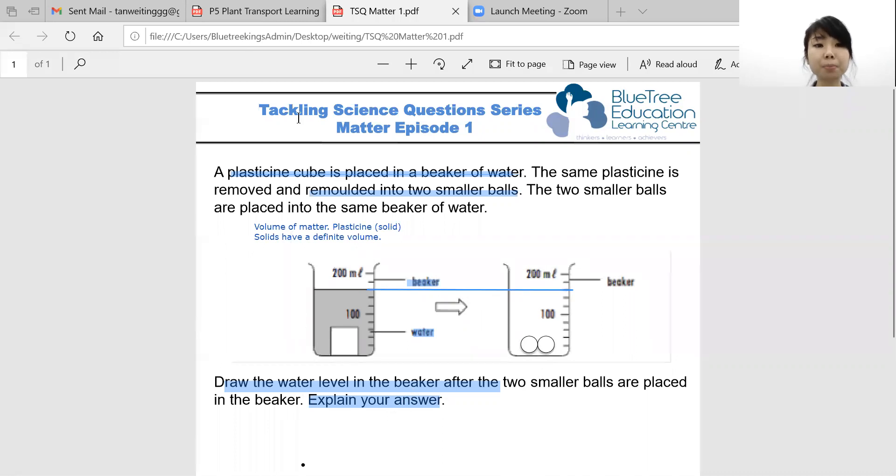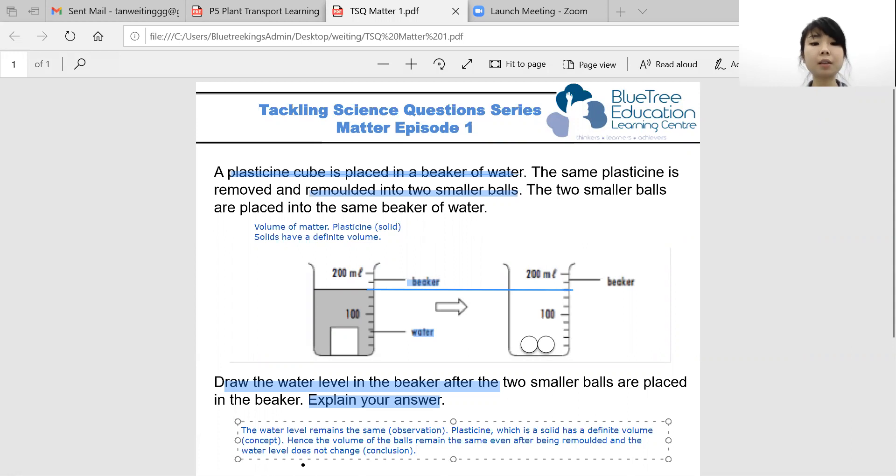Now, how do I explain my answer? So first I start off with the observation that the water level remains the same, and that's because the plasticine, which is a solid, has a definite volume. Now that's the concept. Hence the volume of the balls remain the same even after being remolded.